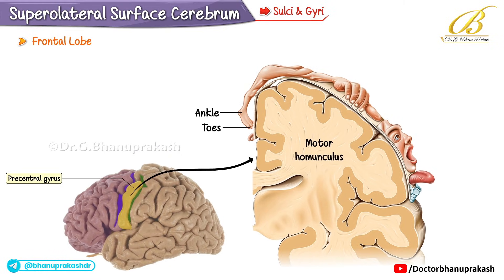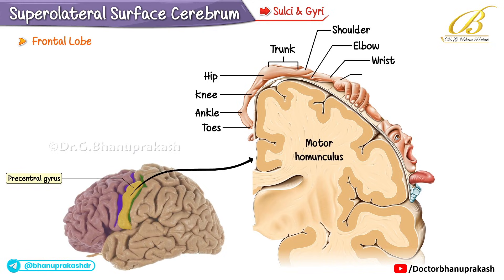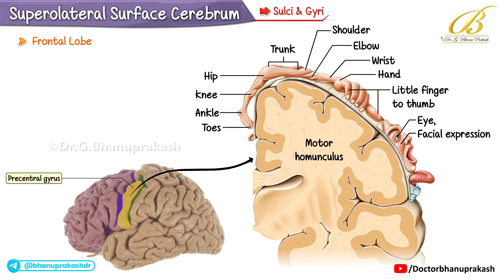The motor homunculus body map progresses from medially to laterally: toes, ankle, knee, hip, trunk, shoulder, elbow, wrist, hand, little finger to thumb, eye, facial expression, mouth, chin, tongue, and swallowing.